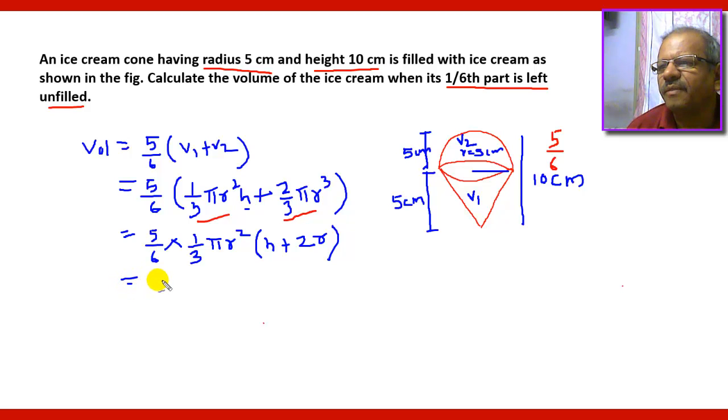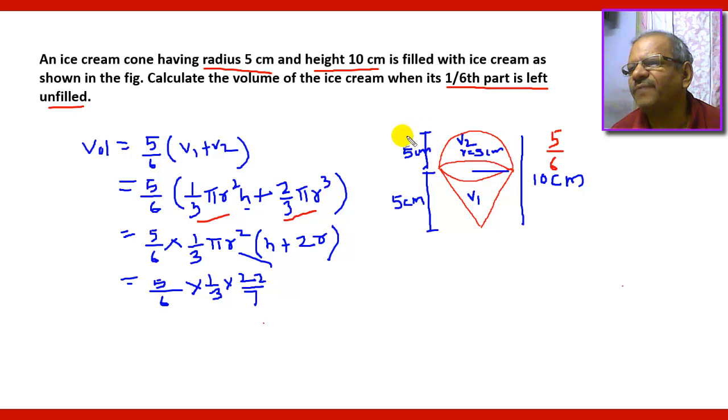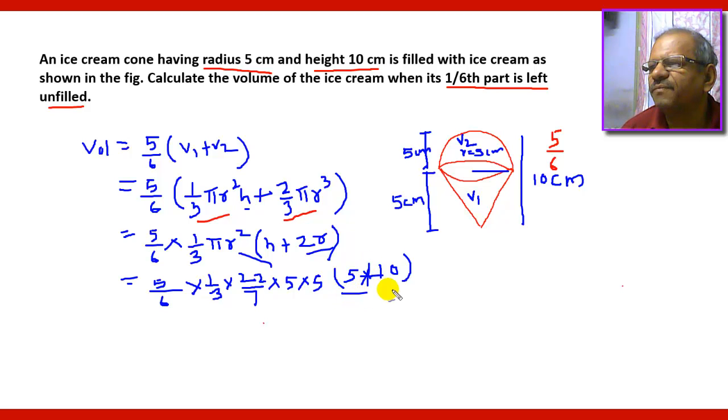Now substitute the values. Five sixth multiplied by one third, pi is 22 by 7, so it will be 22 by 7, then r square, radius is five centimeter so it will be five multiplied by five. Inside the bracket, h, height of the cone that is also five centimeter, so it will be five plus two r, so it will be two into five that will be 10.